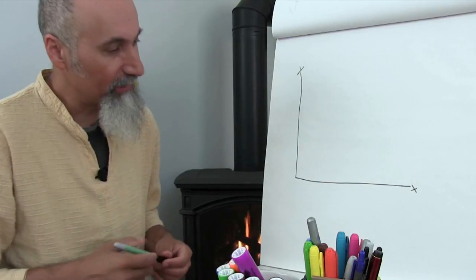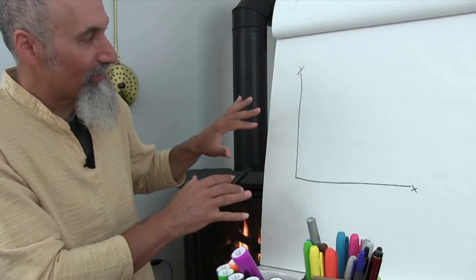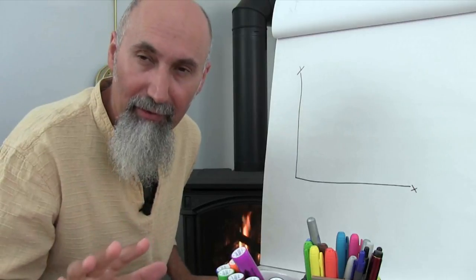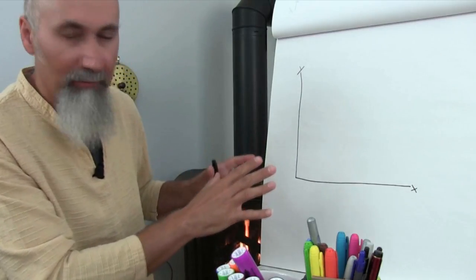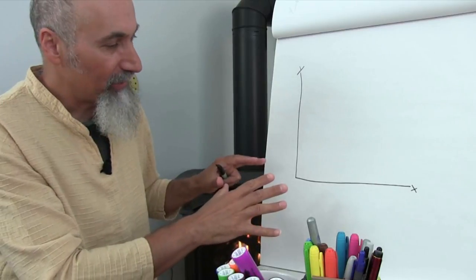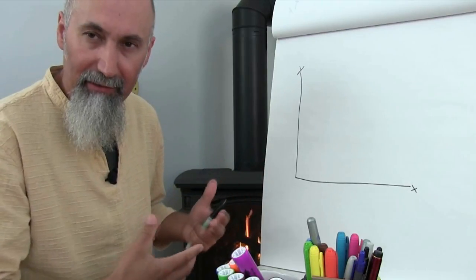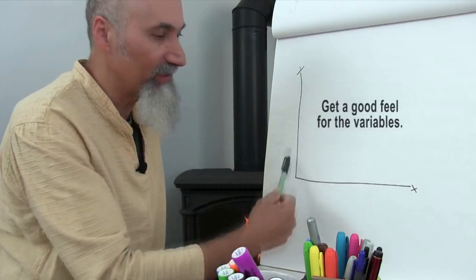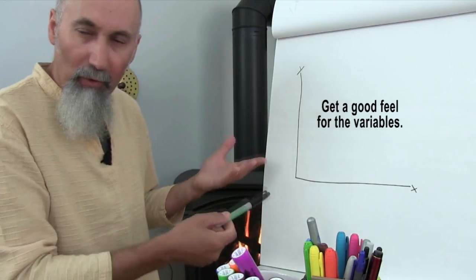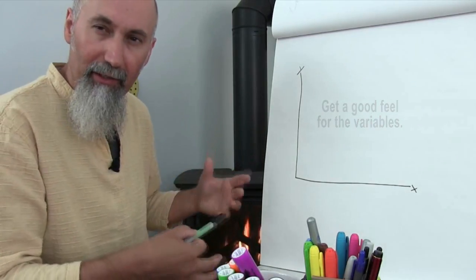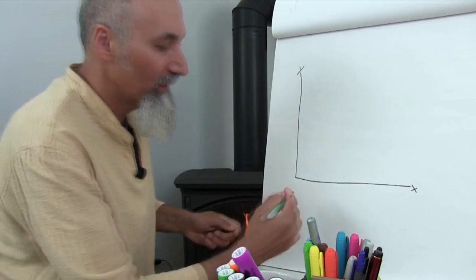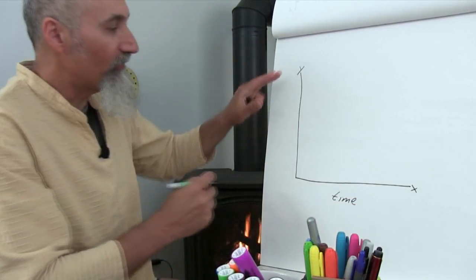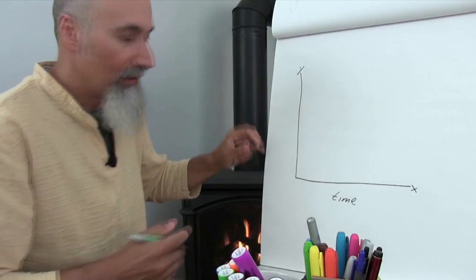Before we get into this, there are two important things to keep in mind before looking at graphs. The first is to take into consideration what the labels — the titles of the axes — are. Basically, what are we comparing? For us, we're going to put time on the X axis and value, or worth, on the Y axis.